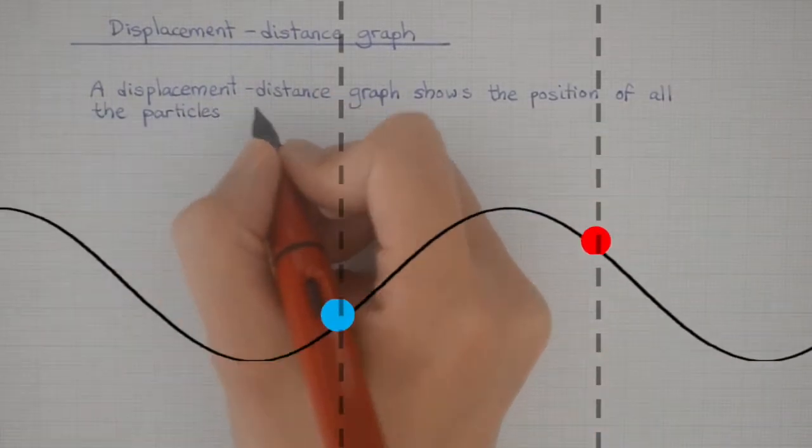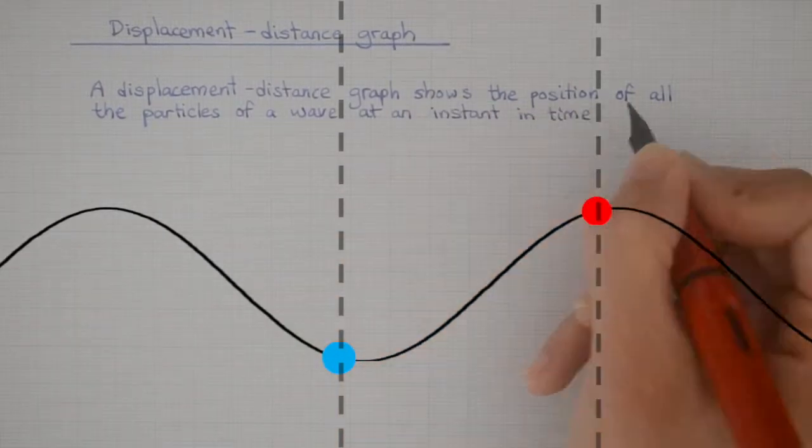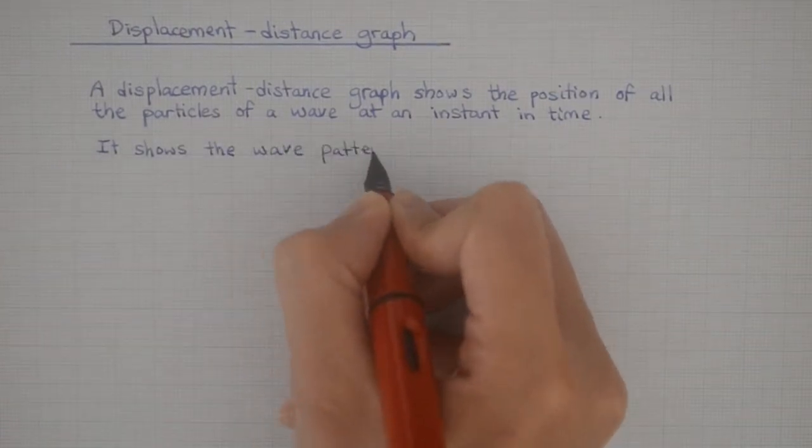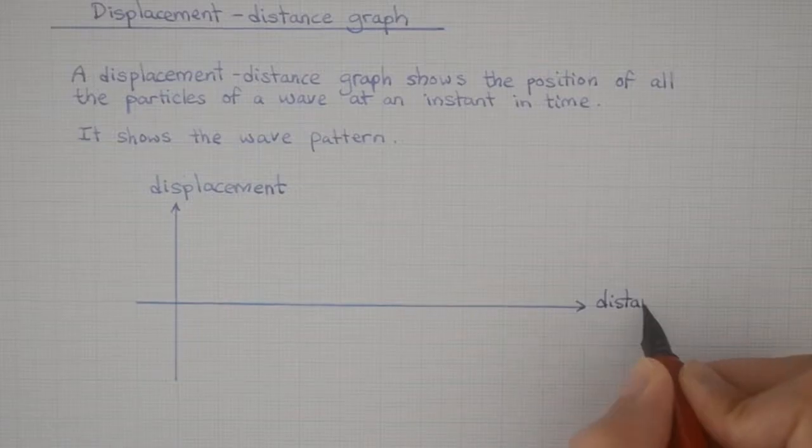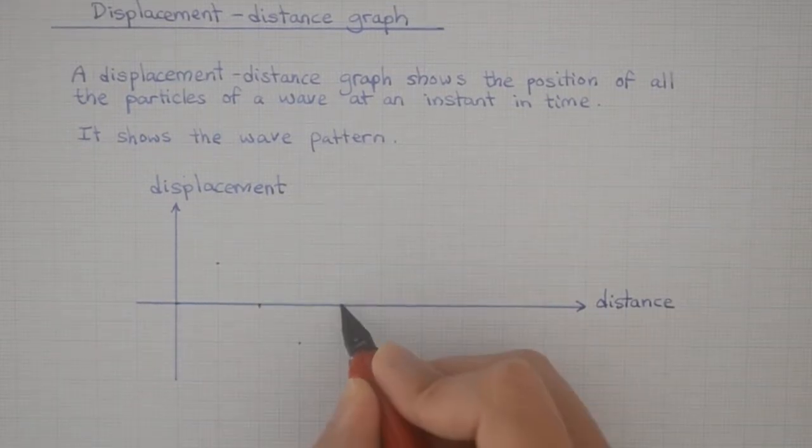If I take a snapshot of this wave, this is what I get. I take this sinusoidal shape and put it onto a graph with displacement on the vertical axis and distance on the horizontal axis.